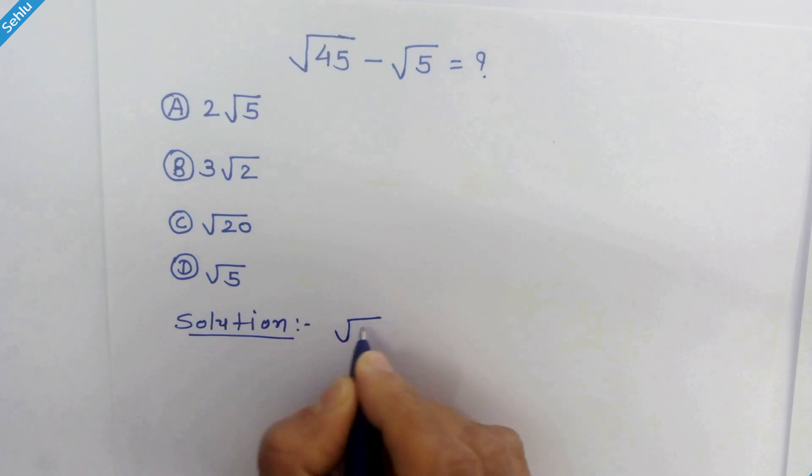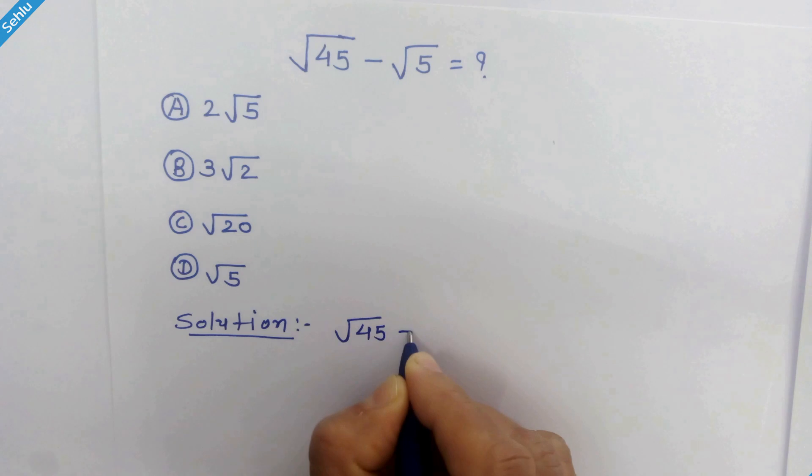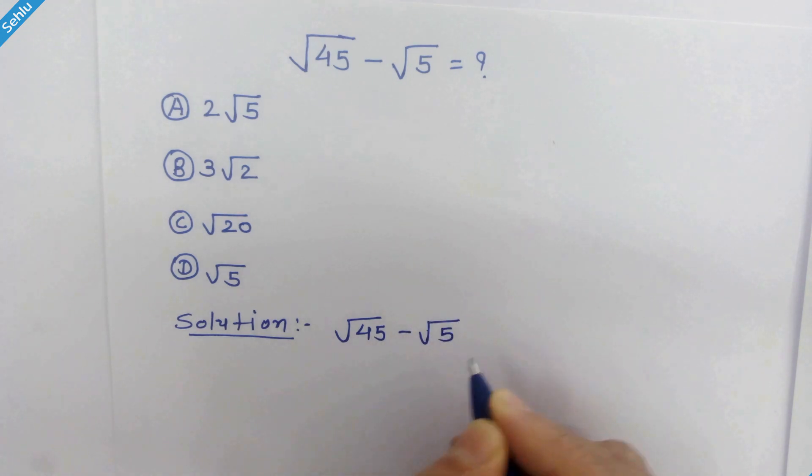So our question is square root of 45 minus square root of 5. Now what will we do? Both 45 and 5 are not perfect squares. So what can we do?